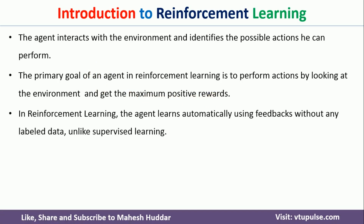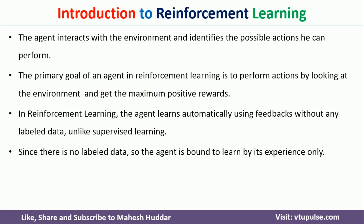In reinforcement learning, we don't have any label data. That's the reason the agent has to learn through his experience. If he is getting a positive reward, the meaning is it's a correct action. If he is getting a negative reward, the meaning is it's an incorrect action. Through this experience only, the agent will learn. But in supervised machine learning, we have label data, and using that label data the algorithm will be trained, so experience doesn't matter much there.